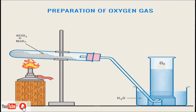For this, the apparatus needed are a test tube filled with potassium chlorate and manganese dioxide, heated with a burner. A delivery tube passes the gas, and oxygen gas is collected in a gas jar by the water displacement method through a beehive shelf in water.